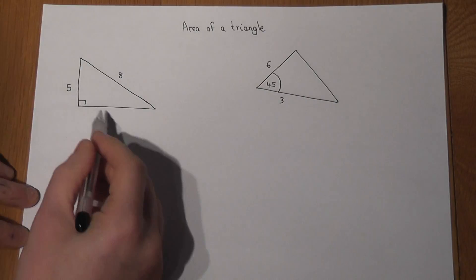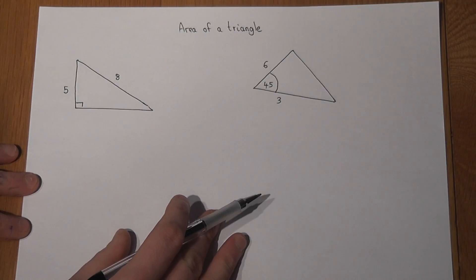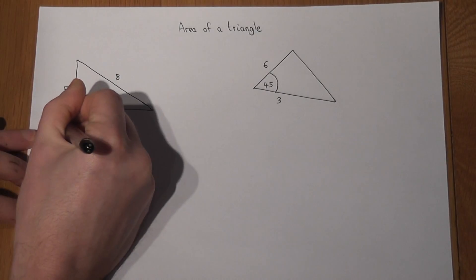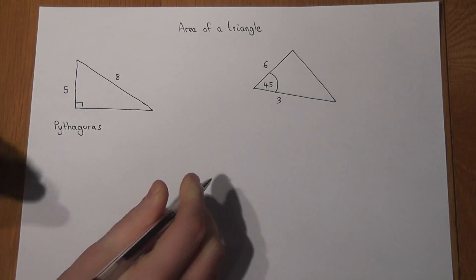However, if we can find the base, we can therefore find the area, and we can find the base using Pythagoras because this is a right-angled triangle.